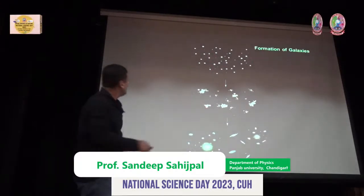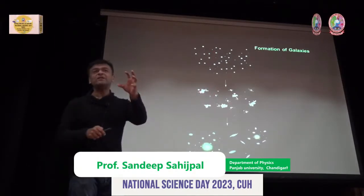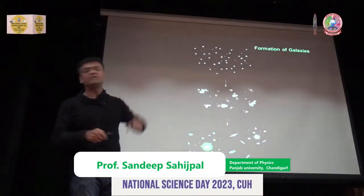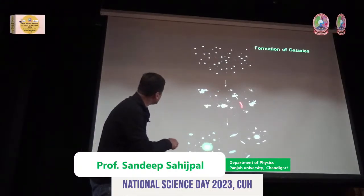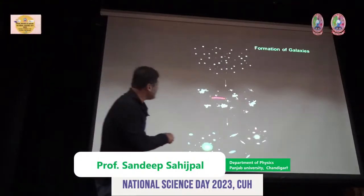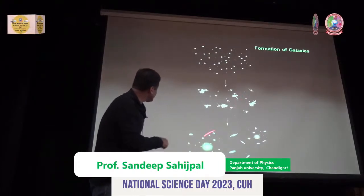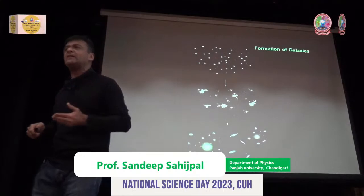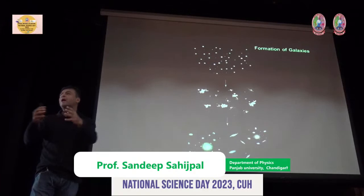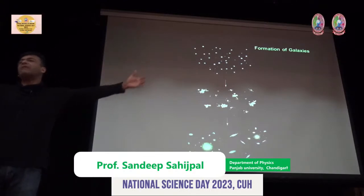These neutral hydrogen atom clouds formed and started colliding with each other, as a result of which small galaxies started forming. These tiny galaxies collided further with each other, resulting in the formation of larger galaxies. This process of smaller galaxies becoming bigger and bigger never stops — this is how galaxies were formed.